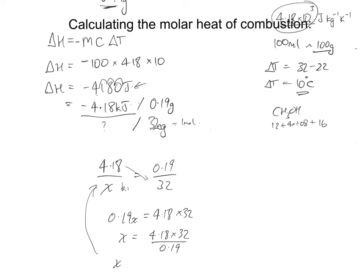Our x value, which is our heat of combustion in kilojoules for one mole, equals if you work that out you'll get 704 kilojoules per mole - remember 32 is one mole. So that's how we work out methanol, the fuel which has a heat of combustion of 704 kilojoules per mole.